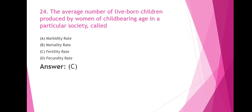The average number of live-born children produced by women of childbearing age in a particular society is called: option A morbidity rate, option B mortality rate, option C fertility rate, option D fecundity rate. The right answer is option C, fertility rate.